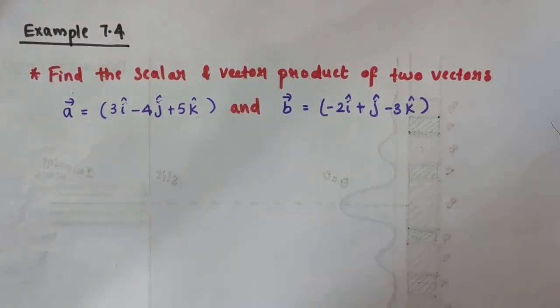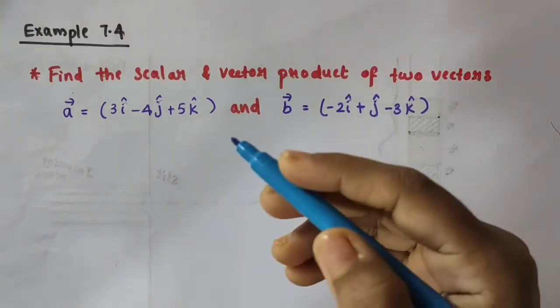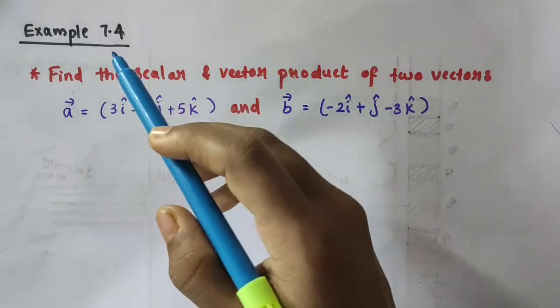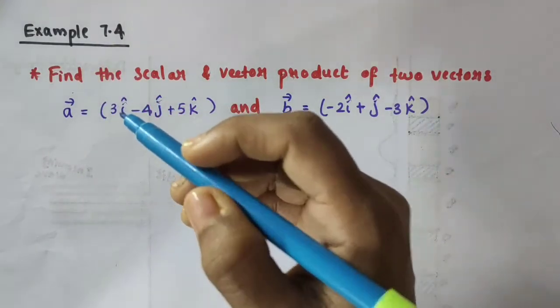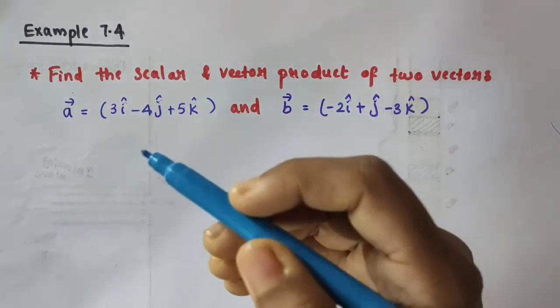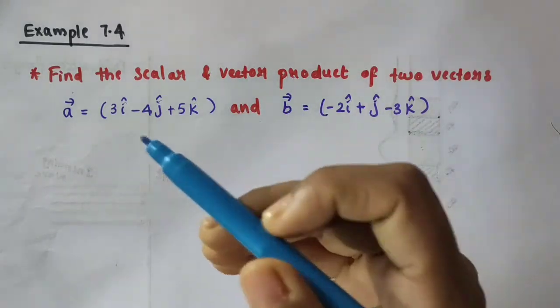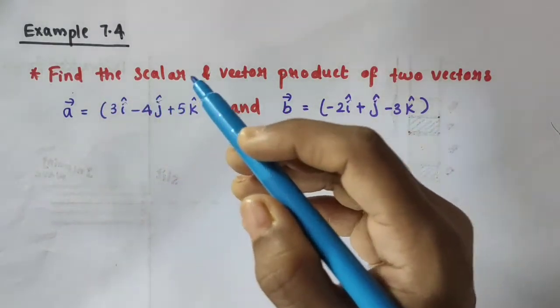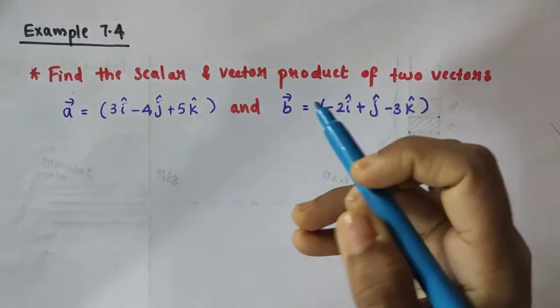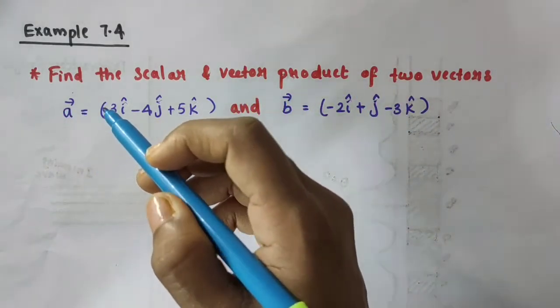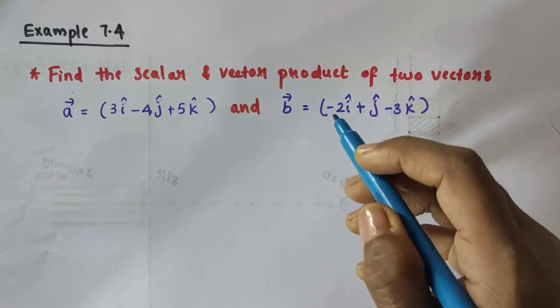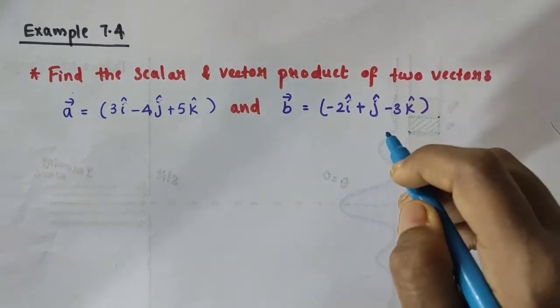Hello everyone. In this video we are going to discuss Example 7.4 from Chapter 7, Systems of Particles and Rotational Motion of Class 11 Physics. The question is: find the scalar and vector product of two vectors. Vector A equals 3i-cap minus 4j-cap plus 5k-cap, and vector B equals minus 2i-cap plus j-cap minus 3k-cap.